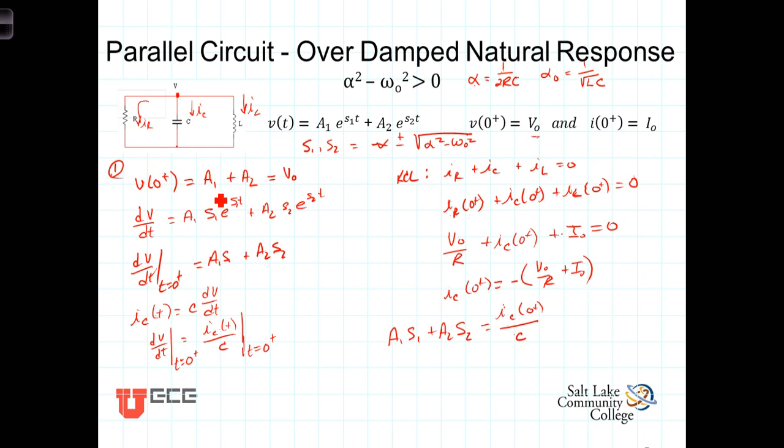We now have two equations in terms of A1 and A2. S1 and S2 are known quantities determined from R, L, and C. i_C(0⁺) is determined from initial conditions. We can then solve these two equations for A1 and A2, which completes the solution for the overdamped parallel RLC circuit response.